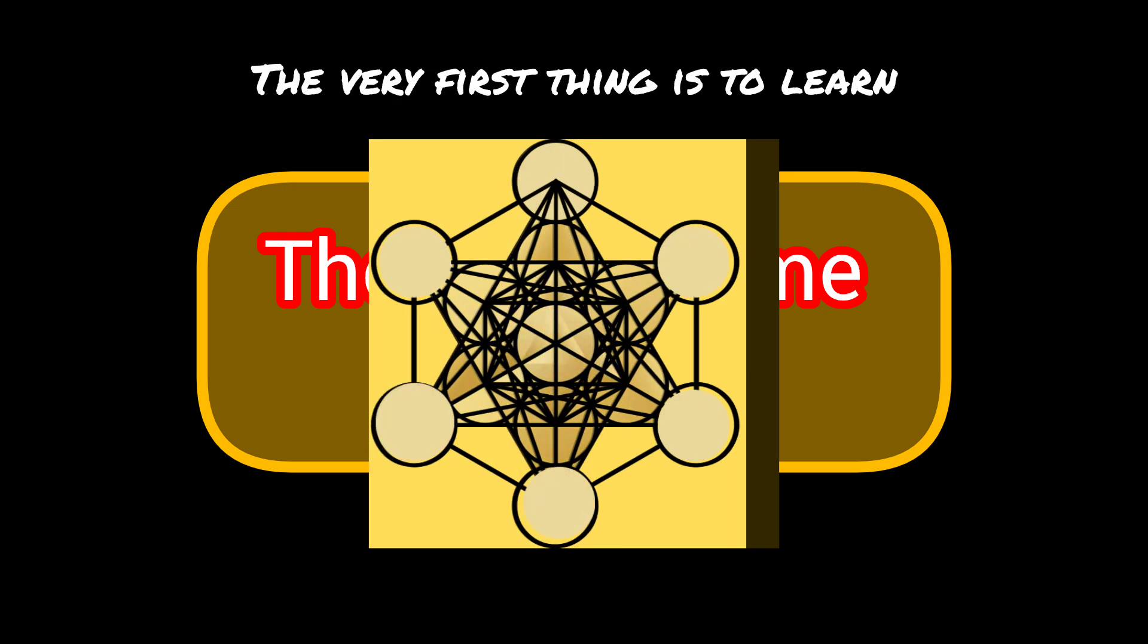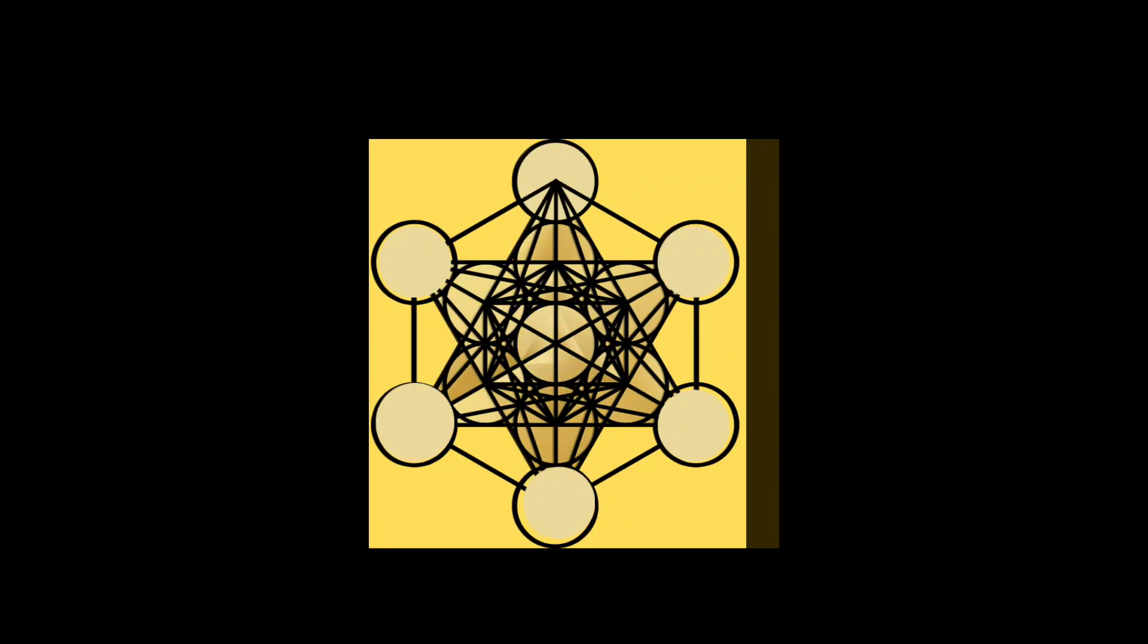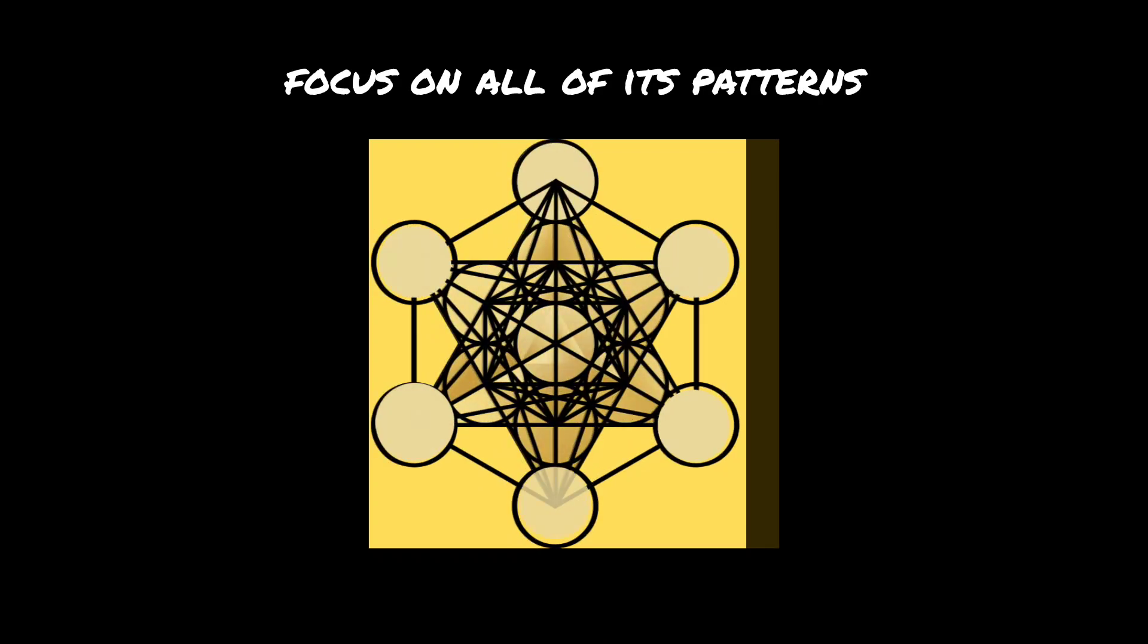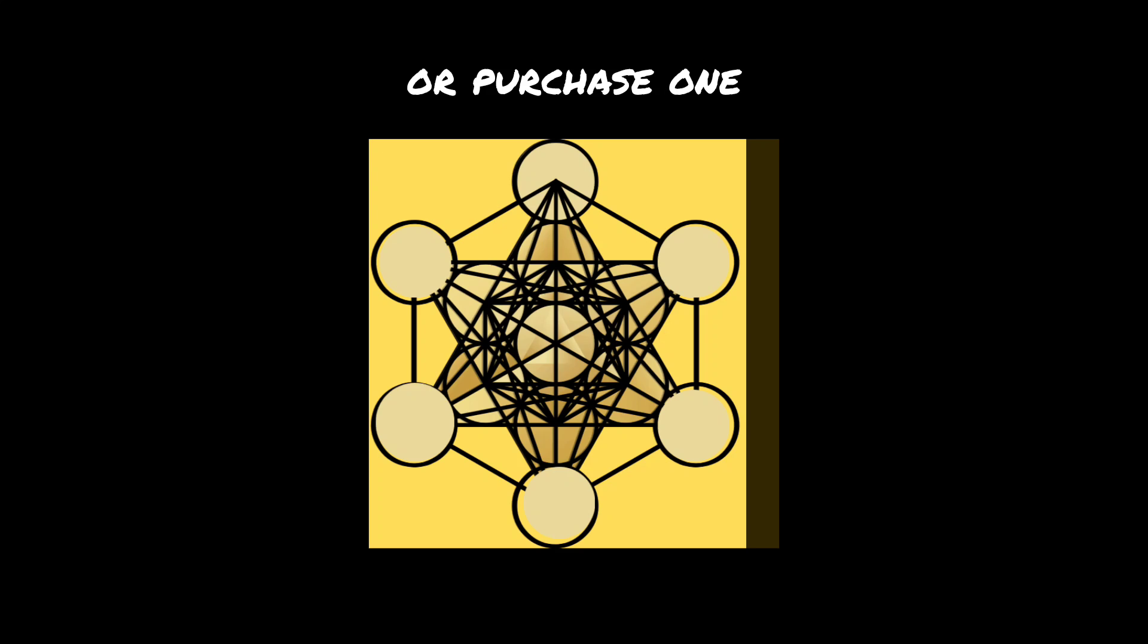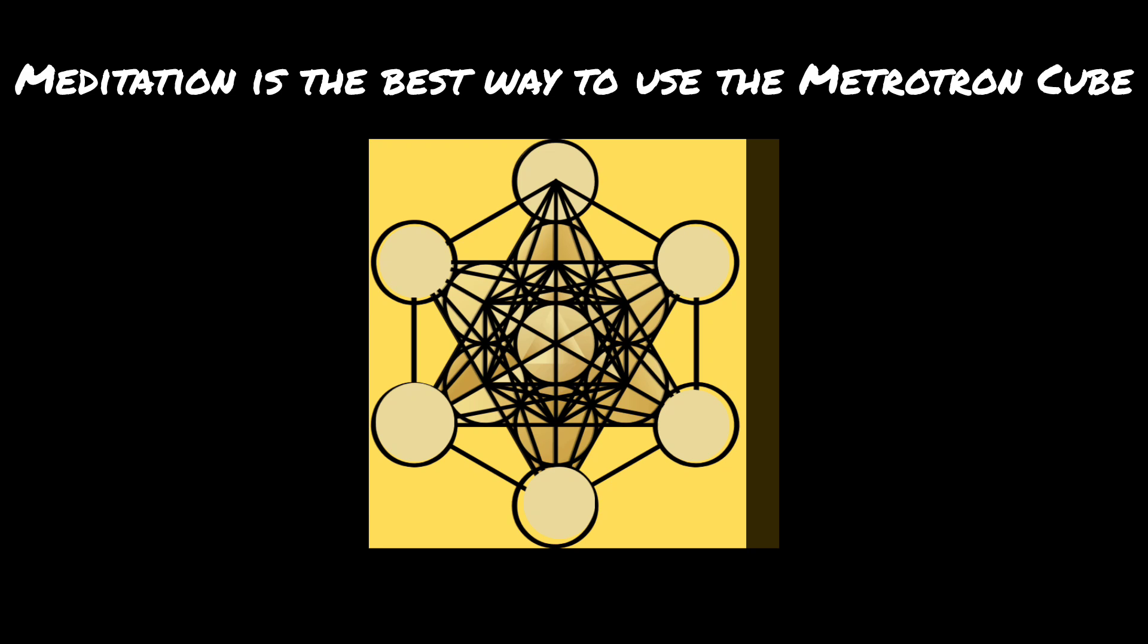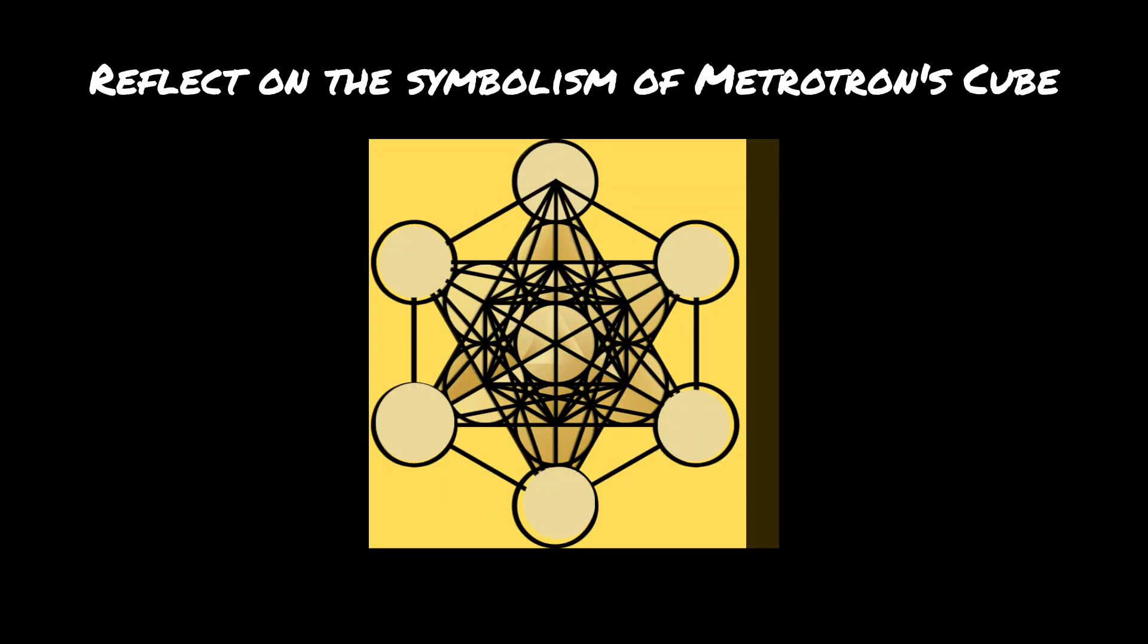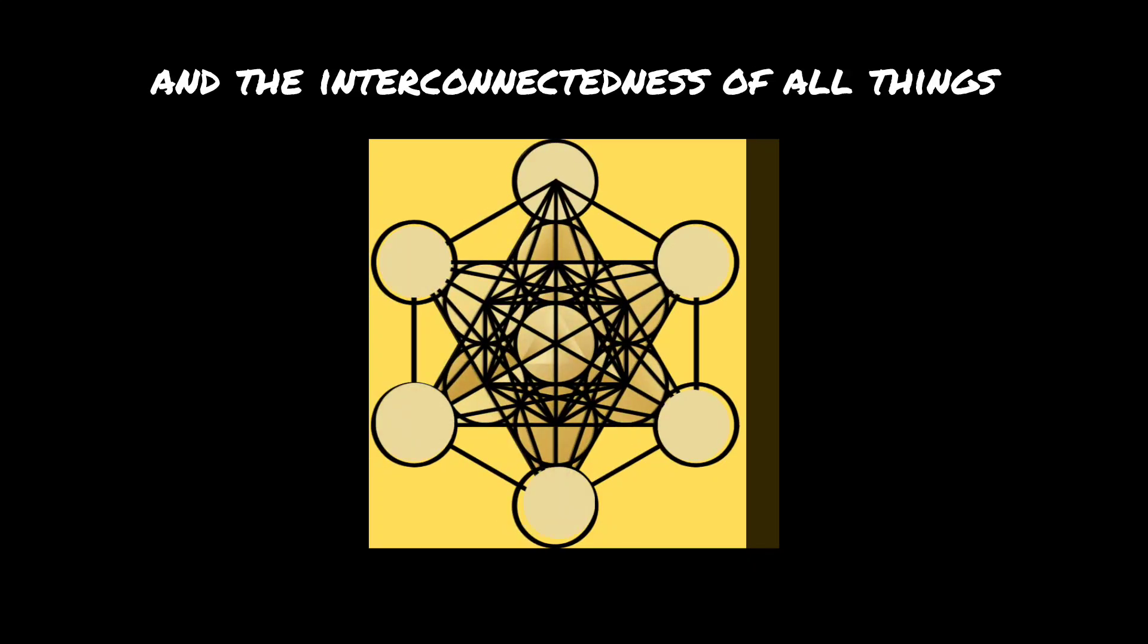The very first thing is to learn how to draw your own Metatron cube. As you are creating the cube, focus on all of its patterns. You can also make a three-dimensional Metatron cube or purchase one that you can use for meditation. Meditation is the best way to use the Metatron cube. Reflect on the symbolism of Metatron's cube, which represents unity, harmony, and the interconnectedness of all things.